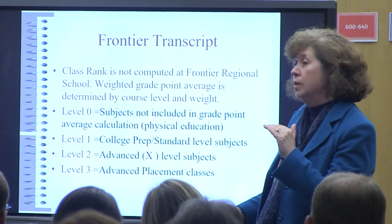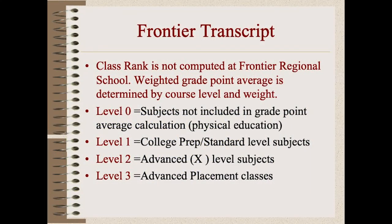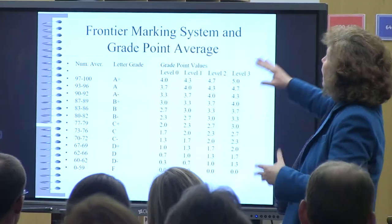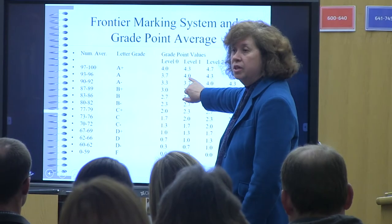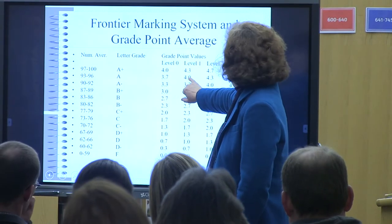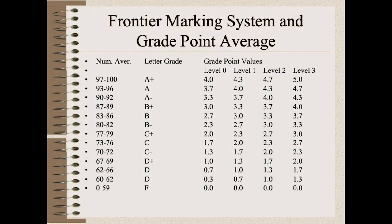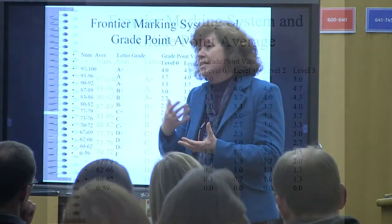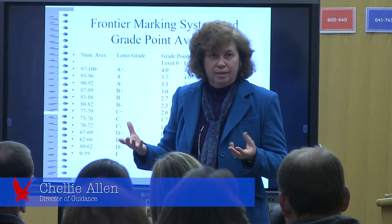We do not rank individually here at Frontier — only by decile. If you look at a level one course and receive an A, the traditional 4.0 GPA points go in. If you're doing an AP class and earn an A, it's a 4.7. So there is an incentive for doing that extra work.